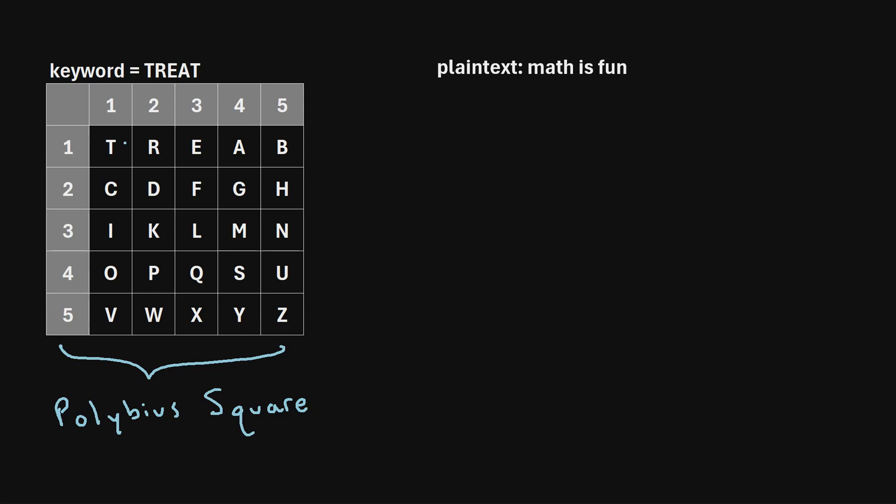So, starting in the top left corner, we start writing the word treat. So in this first block, we write T, then R, then E, then A, but instead of writing another T right here, remember each letter in the alphabet can only occur once, so we've already written a T. So once we've exhausted all the letters in the keyword,